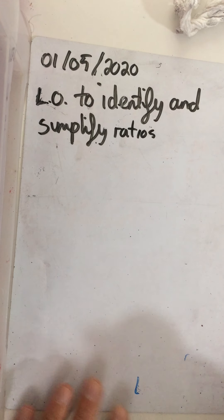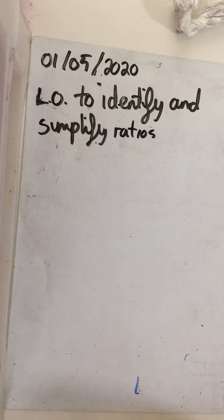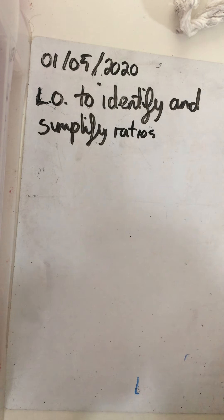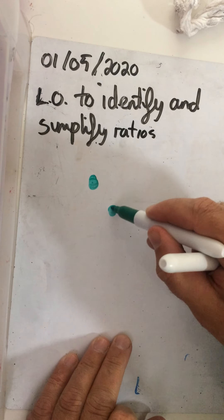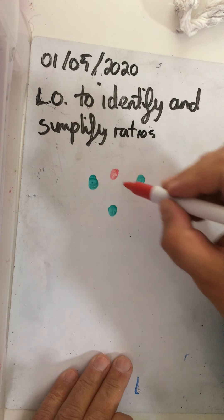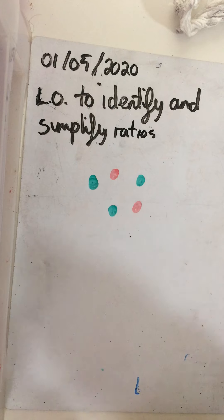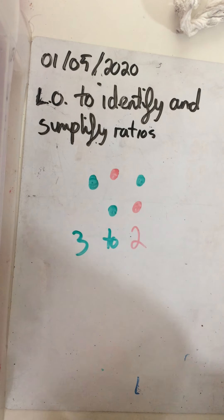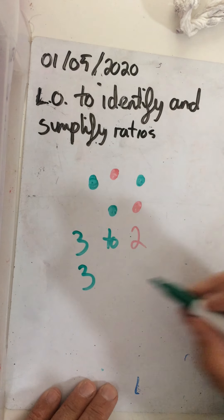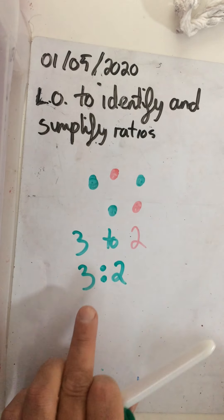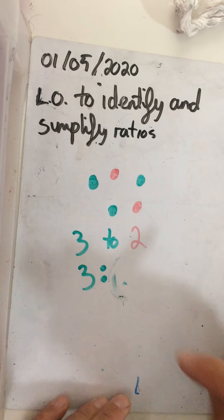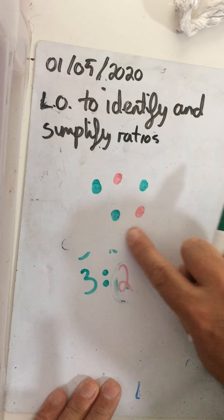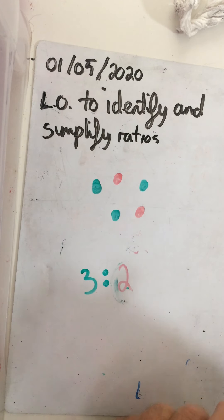As the learning objective says, we are looking at ratios. A ratio is basically comparing values — how much of one thing there is compared to another. If we have three green dots and two red dots, the ratio is three to two. We write it with two dots between the numbers: three to two. For every three green dots, there are two red. We'll go straight into the work today.